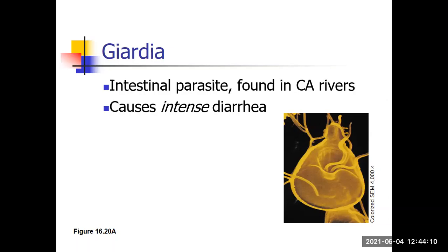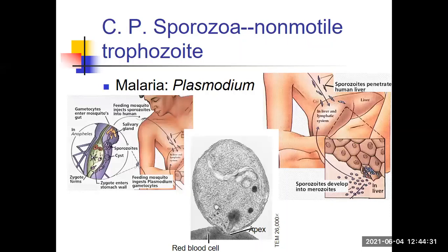The third type of movement is no movement at all. These are the sporozoans, and sporozoans have a non-motile adult stage — the adult stage just sits there. The example is plasmodium. Plasmodium is a sporozoan that causes malaria. If you look at the picture, the Anopheles mosquito is the vector. When the female bites you, she releases plasmodium into your bloodstream. It floats around, goes through your bloodstream, finally finds its way to the liver, and matures there.